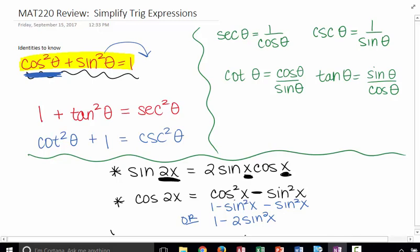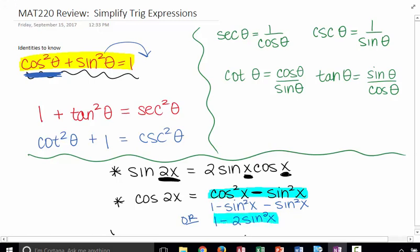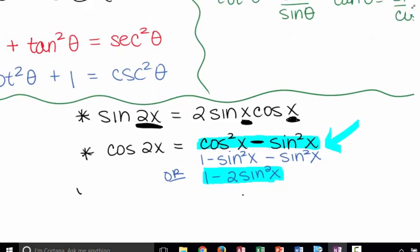Now, I do not necessarily memorize this basic cosine of 2x and this one, because truly, if I just know this first one, cosine squared x minus sine squared x, I can always use the Pythagorean identity to help me out.